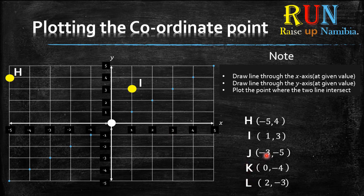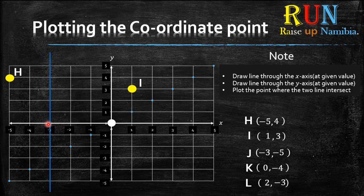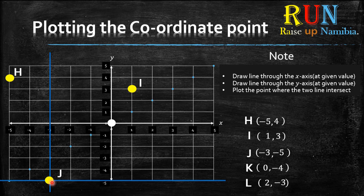For J, the x value is negative 3. Go on the x-axis, find negative 3, and draw a line through it. The y value for J is negative 5. Go to the y-axis, find negative 5, and draw your line. Where the two lines intersect — that's where you plot your J.